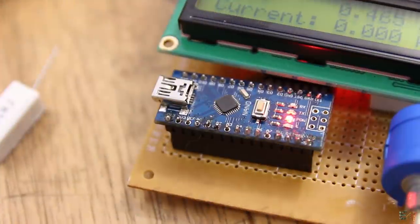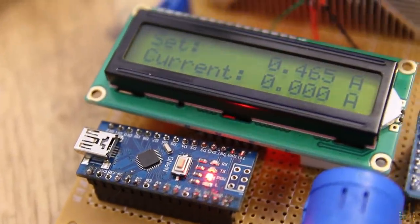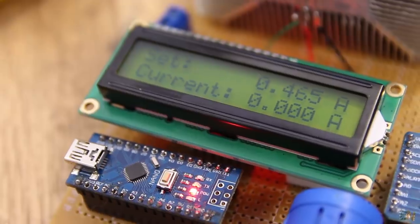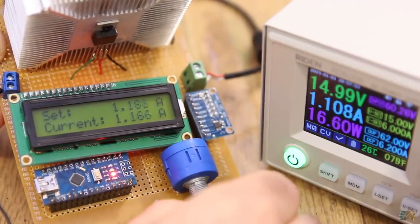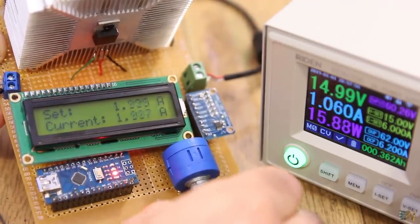The Arduino is here just to read and print the values on the LCD screen. Using this device I can simulate a load of any resistance and control the current flow from 0 up to 5.2 amps.